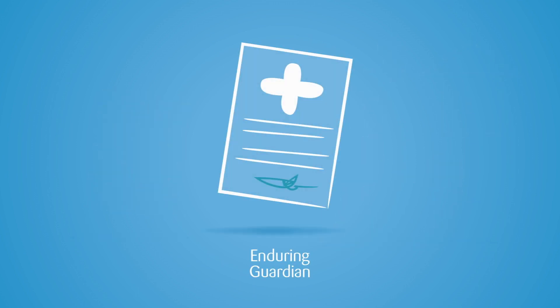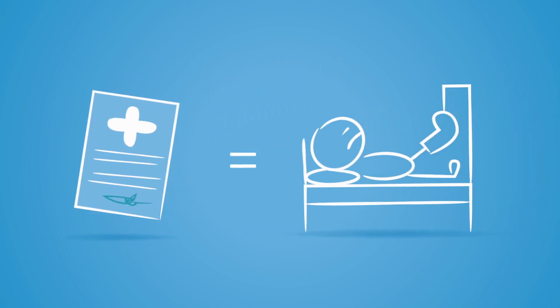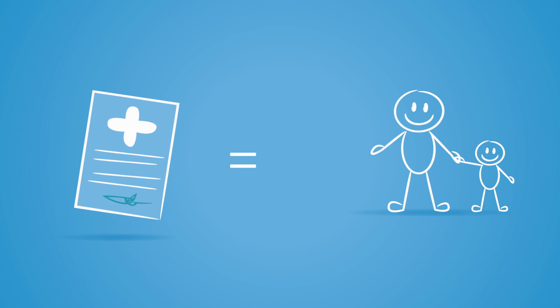Enduring guardian. An enduring guardian appoints someone to make lifestyle and medical decisions on your behalf if you are incapacitated and lose the ability to make your own decisions. This document is especially important if you have specific wishes about your medical care and who can make decisions on your behalf.